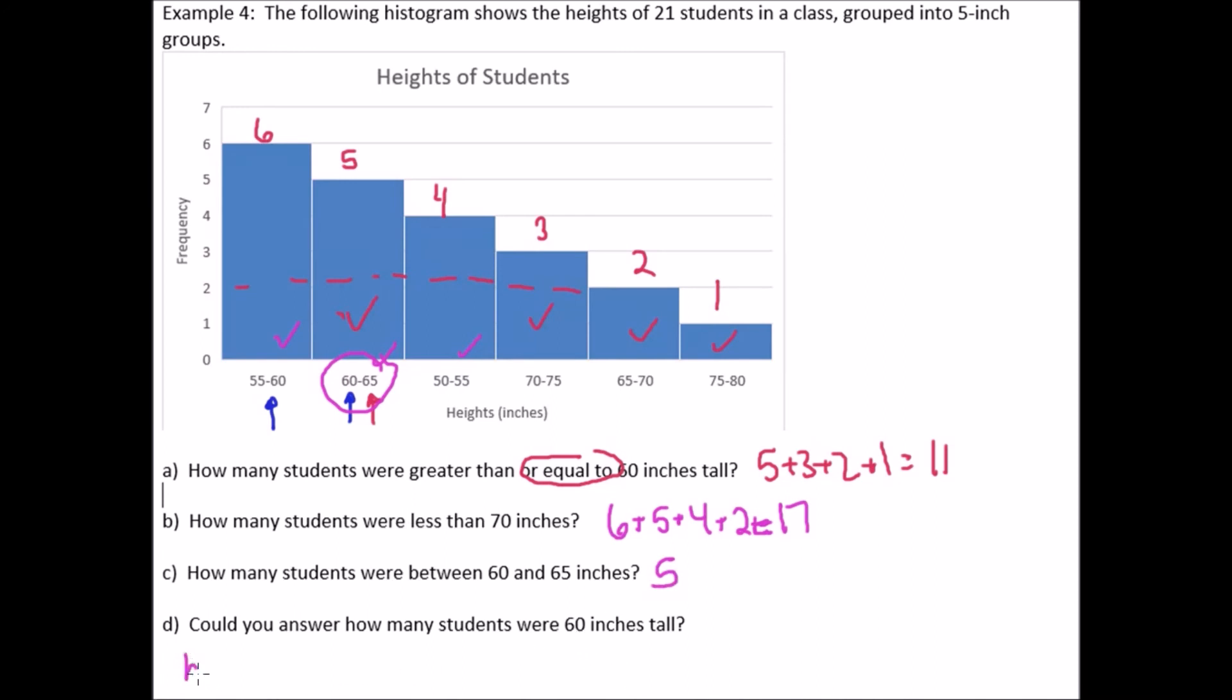So all these people are less than 70 inches. 11, 13, 17 people. Okay. How many students were between 60 and 65 inches? We'd have to look that up here. Five. And could you answer how many students were 60 inches tall? Okay. The answer here is no, because we are given intervals. So if we take a look at the interval of 60, it's from 60 to 65. So all five, of course, five of these individuals could have been 61 inches tall. All of them could have been 60 inches tall, but we don't actually know because we're not giving the data in a chart. We're only given that data in an interval. So, no, we're not able to actually pinpoint.